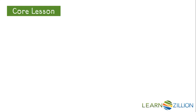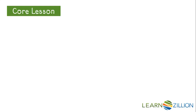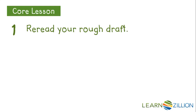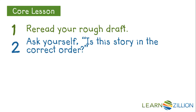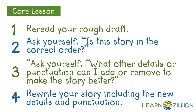We just finished revising our new scene of Why the Bear Has a Short Tail. Now our story sounds really smooth and has better details to help the reader understand what is happening. We are now ready to edit and publish our reading response. In order to revise your rough draft so it is ready to publish, you can follow these four steps. First, reread your rough draft. Then ask yourself, is the story in the correct order? Third, ask yourself, what other details or punctuation can I add or remove to make the story better? Finally, rewrite your story, including the new details and punctuation.